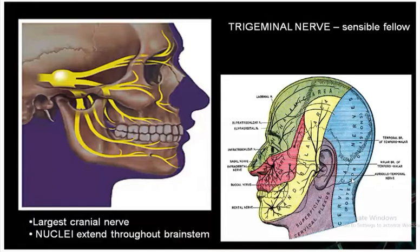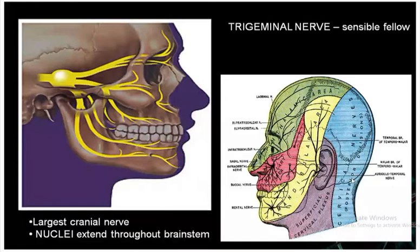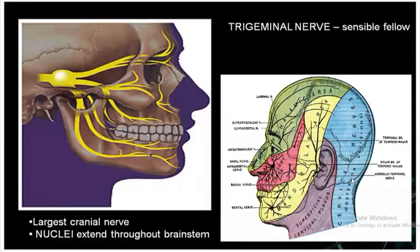The trigeminal nerve is the fifth cranial nerve and the largest cranial nerve; its nuclei extend throughout the brainstem. It is a mixed nerve consisting of both motor and sensory components. The functional components include special visceral efferent and general somatic afferent.